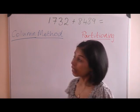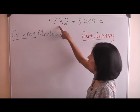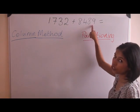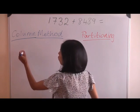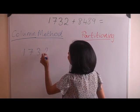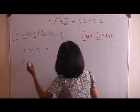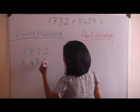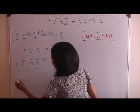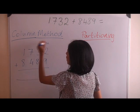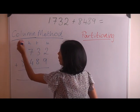The sum that we're going to be looking at is 1732 plus 8489. Like before, you need to make sure that the numbers are written in the correct columns for which they belong in terms of their place value. There's the units, tens, hundreds and now we have thousands.